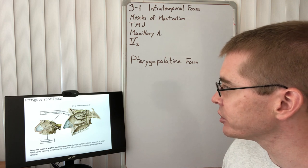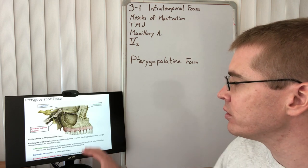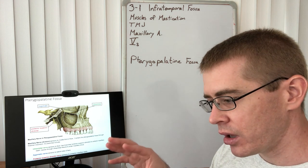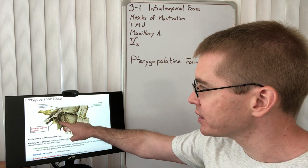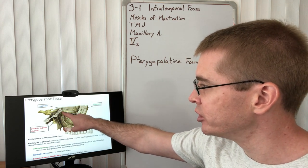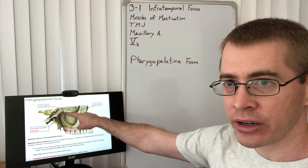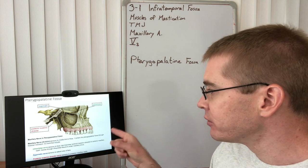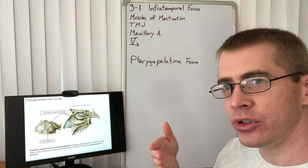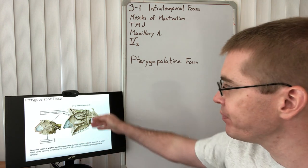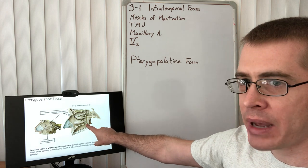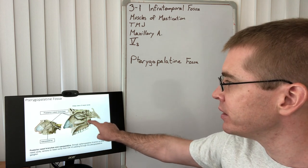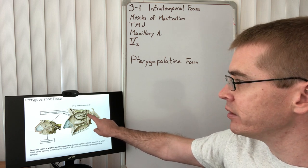Now we can see the pterygopalatine fossa. Pterygopalatine fossa is deep to the infratemporal fossa. This is the pterygopalatine fossa, this small region right here through which the maxillary nerve travels and in which the pterygopalatine ganglion is located. This region of the head is most easily accessed from a midline view, so mid-sagittal cut opening up and then just above the hard palate where the interface of the soft and hard palate is. We'll be able to chip away some of the nasal concha and the sphenoid bone here to take a look at the pterygopalatine ganglion.